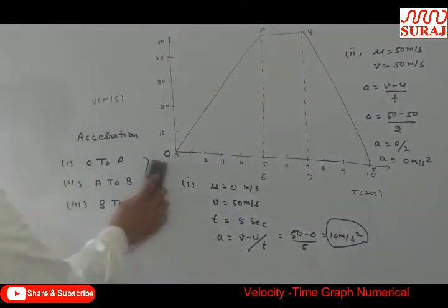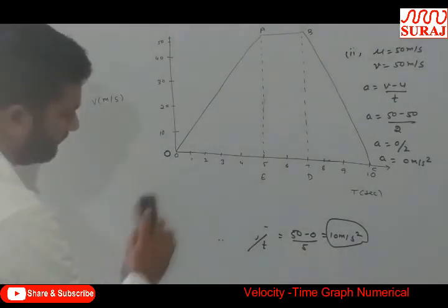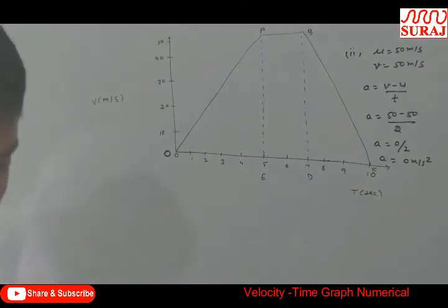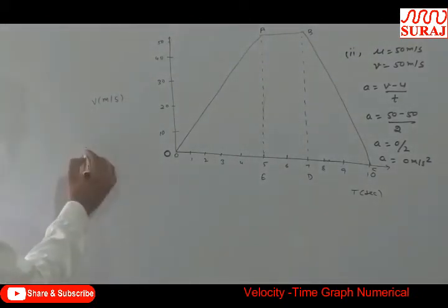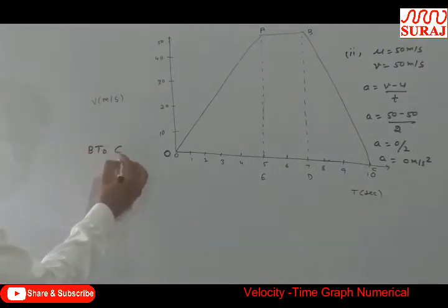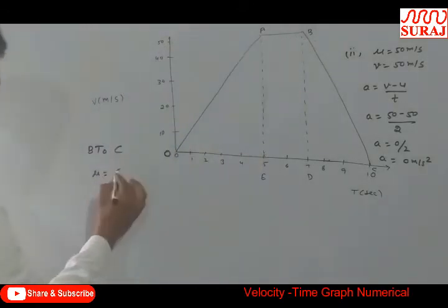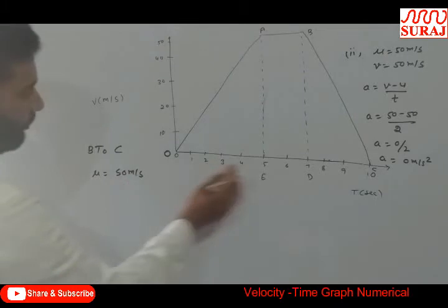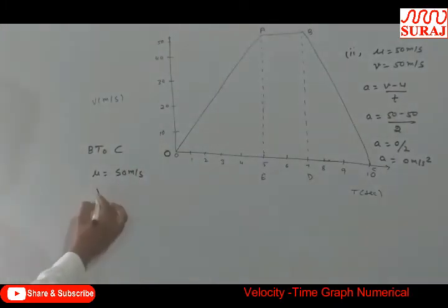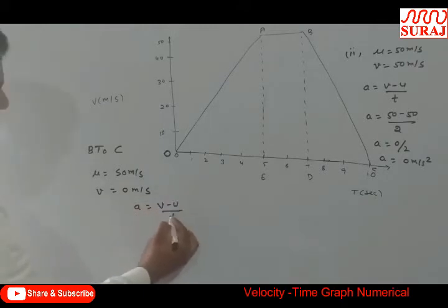Now, in third case, B to C, U is equal to 50 meter per second. Finally, when we reach the point C, here V becomes 0 meter per second. So A is equal to V minus U by T.